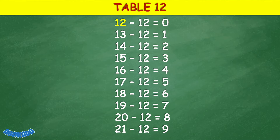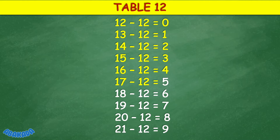Table 12: 12 minus 12 equals 0, 13 minus 12 equals 1, 14 minus 12 equals 2, 15 minus 12 equals 3, 16 minus 12 equals 4, 17 minus 12 equals 5, 18 minus 12 equals 6, 19 minus 12 equals 7, 20 minus 12 equals 8, 21 minus 12 equals 9.